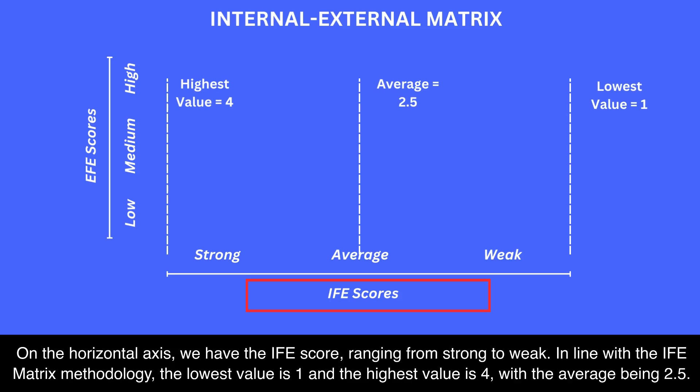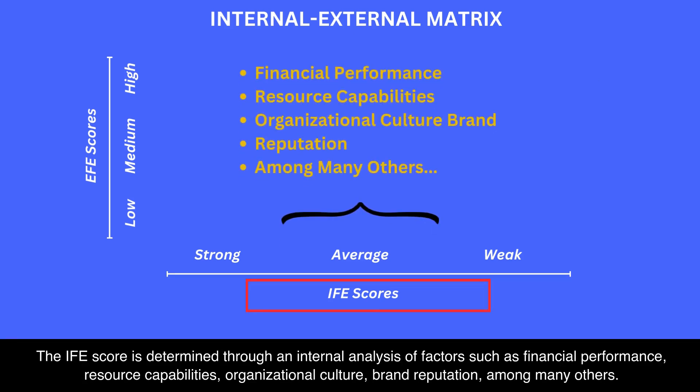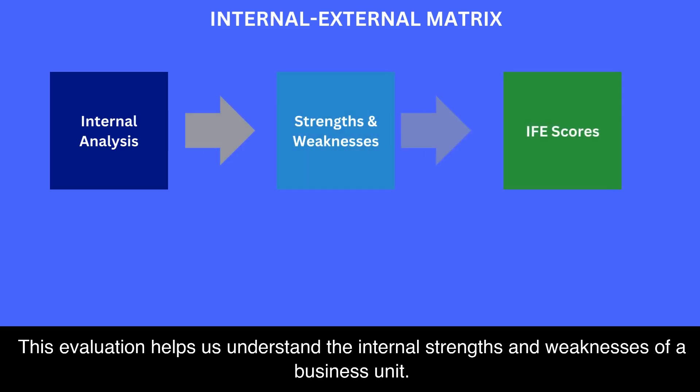On the horizontal axis we have the IFE score, ranging from strong to weak, in line with the IFE matrix methodology. The lowest value is 1 and the highest value is 4, with the average being 2.5. The IFE score is determined through an internal analysis of factors such as financial performance, resource capabilities, organizational culture, and brand reputation, among many others. This evaluation helps us understand the internal strengths and weaknesses of a business unit.